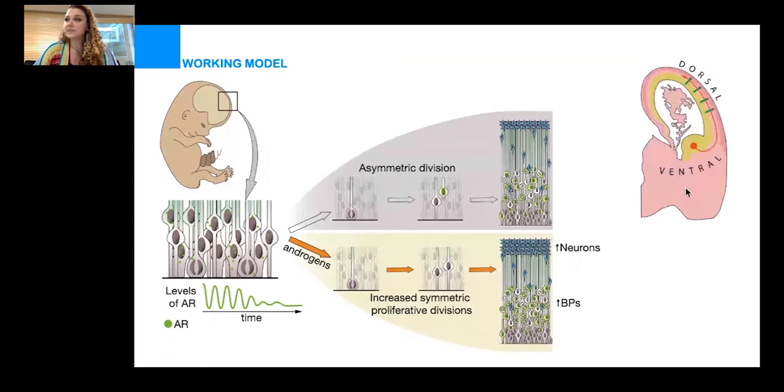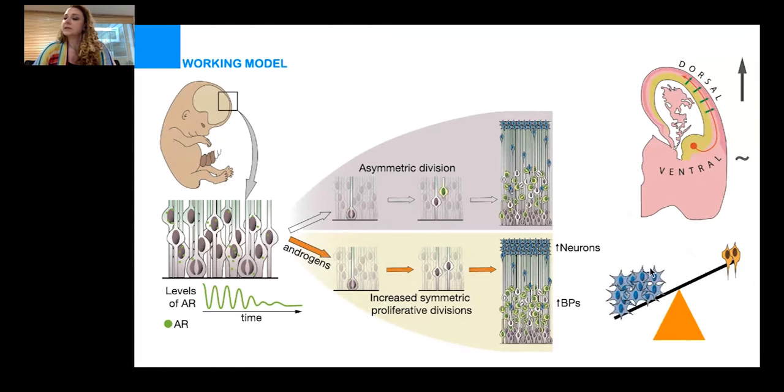This increase in excitatory neurons is observable in the dorsal telencephalon. But the progenitors in the ventral telencephalon do not respond to androgens in the same way, and potentially the number of interneurons remains the same. In the brain, the numbers of excitatory and interneurons are normally at a certain ratio—there's more excitatory neurons. But the shift in this production under the influence of androgens could lead to a greater imbalance of excitatory to inhibitory neurons, which is actually really important because it is this skewed balance that is a characteristic of some of the disorders that have a sex bias, like autism spectrum disorder and schizophrenia.